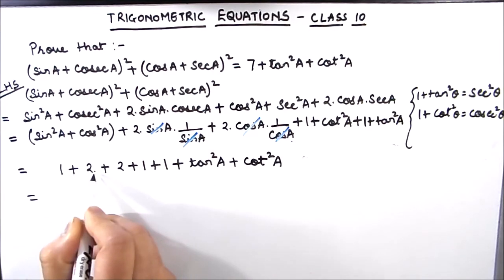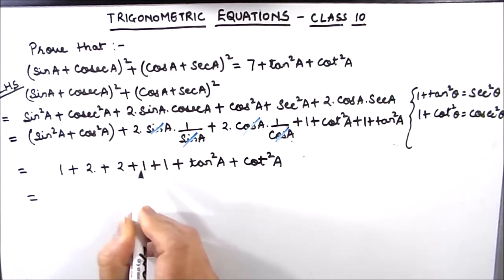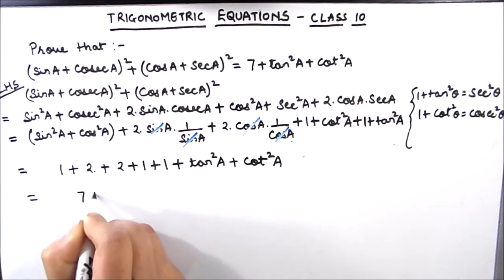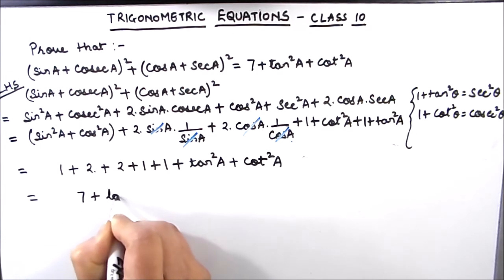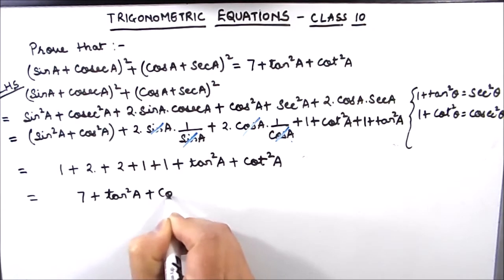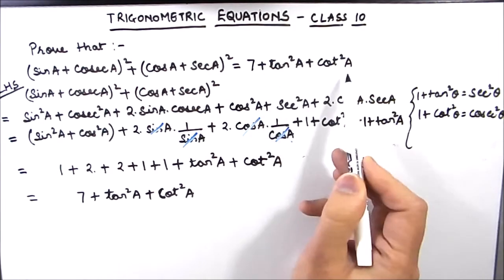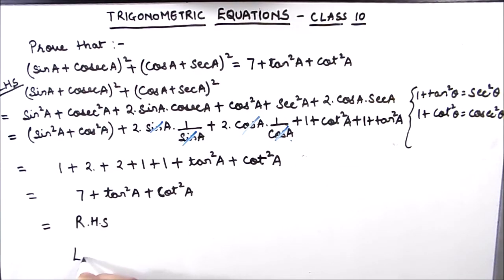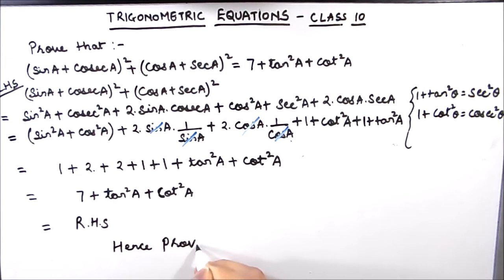So 1 + 2 + 2 + 1 + 1 is 7. So this is 7 + tan² A + cot² A. And this whole expression is equal to our right hand side. So we have proved that left hand side is equal to right hand side. Hence proved.